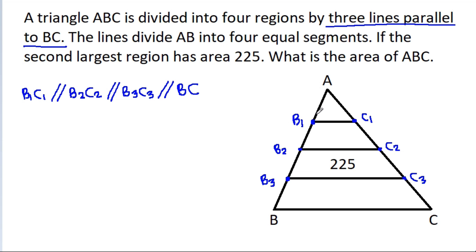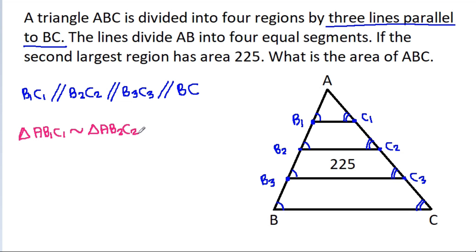That means these angles will be equal and also these angles will be equal. So triangle AB1C1 will be similar to triangle AB2C2, will be similar to triangle AB3C3, will be similar to triangle ABC.